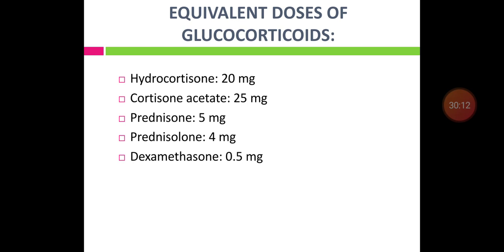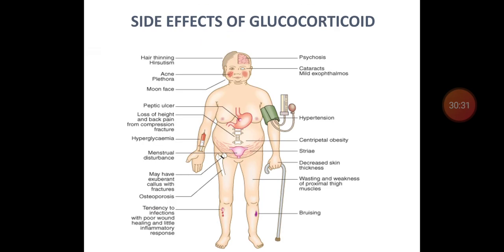Equivalent doses of glucocorticoids: 20 mg hydrocortisone is equivalent to 25 mg cortisone acetate, 5 mg prednisone, 4 mg prednisolone, and 0.5 mg dexamethasone. Side effects of glucocorticoids are the symptoms and signs of Cushing's syndrome, including diabetes mellitus, hypertension, obesity, striae, muscle wasting, osteoporosis, delayed wound healing, menstrual irregularities, peptic ulcer, and acne.